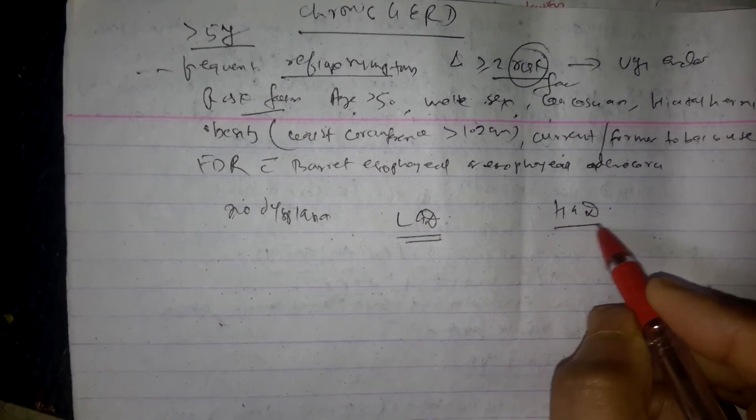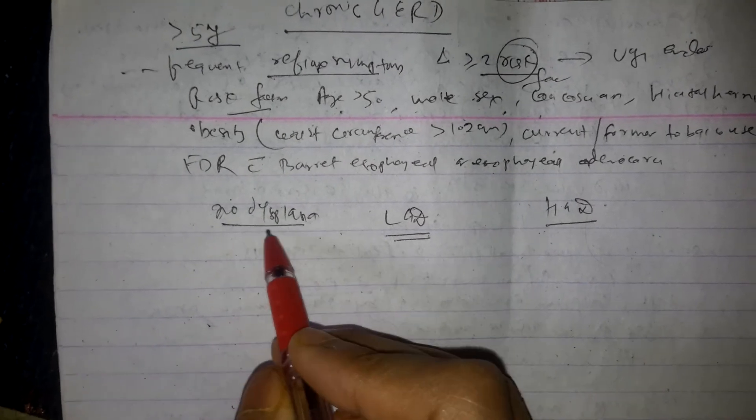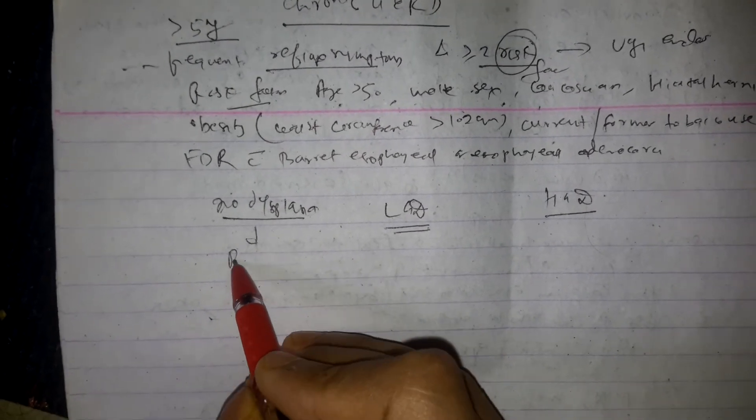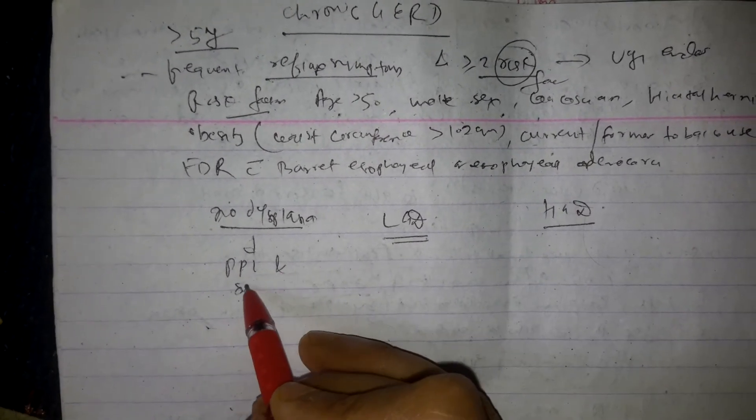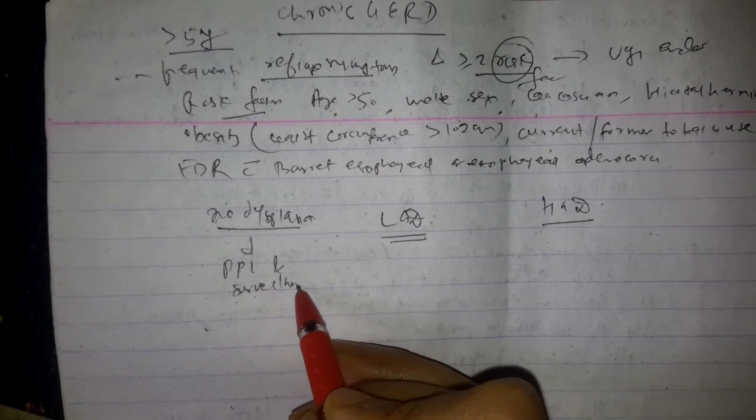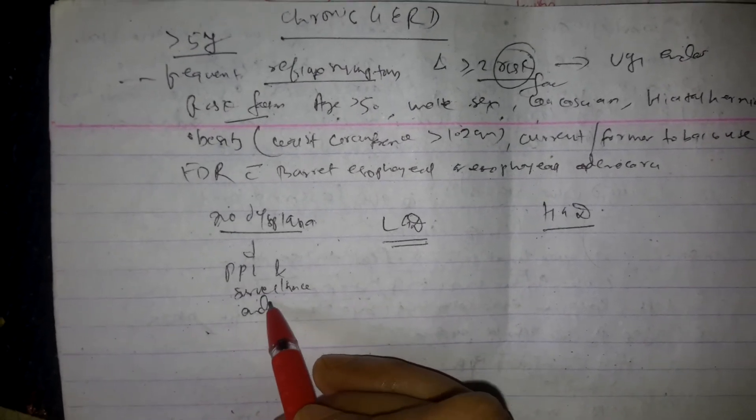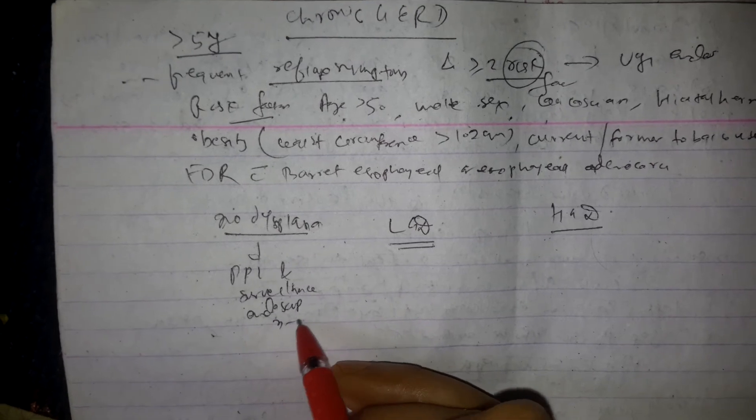So if there is no dysplasia, then PPI is given and surveillance endoscopy in three to five years is done.